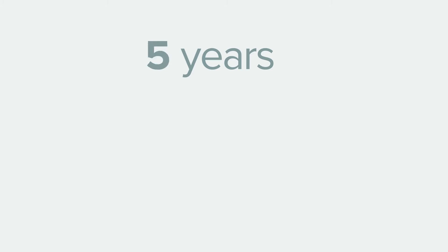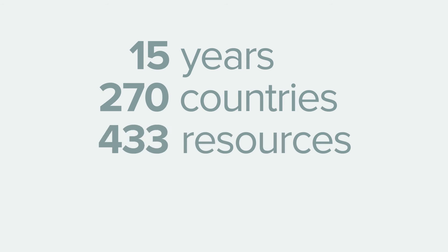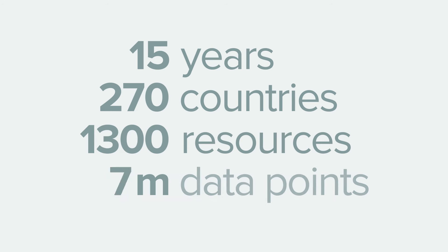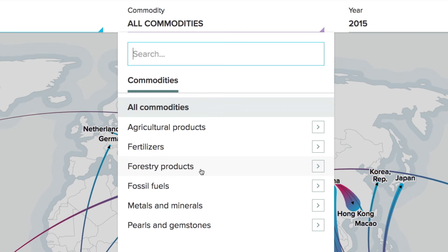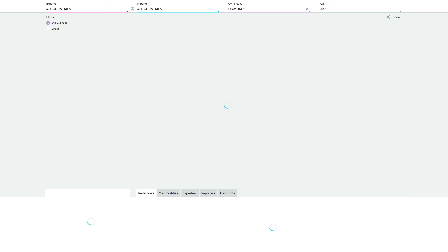The trade data on the website is from the United Nations Statistics Division's Common Trade database. Of their 5,300 records of all merchandise trade, we include about 1,300 records across all kinds of natural resources: agriculture, forestry, fisheries, fossil fuels, metals and minerals, and pearls and gemstones.